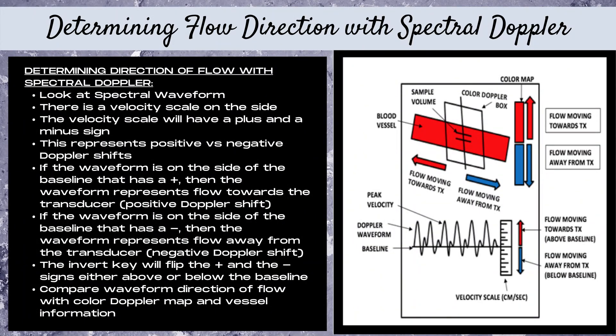Finally, how to determine flow direction with spectral Doppler. Look at the velocity scale on the side of the spectral waveform — it has a plus and a minus sign. If the waveform is on the side of the baseline with a plus, it represents flow towards the transducer (positive Doppler shift). If the waveform is on the side with a minus, it represents flow away from the transducer (negative Doppler shift). The invert key can flip the positive and negative signs, so compare your waveform with your color Doppler map and vessel information to ensure everything is consistent.